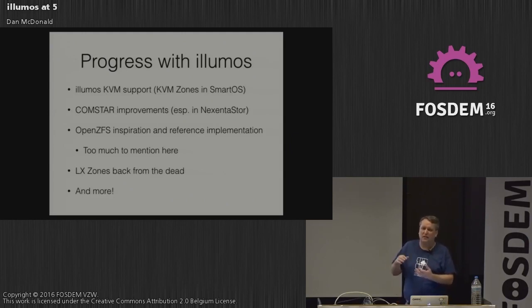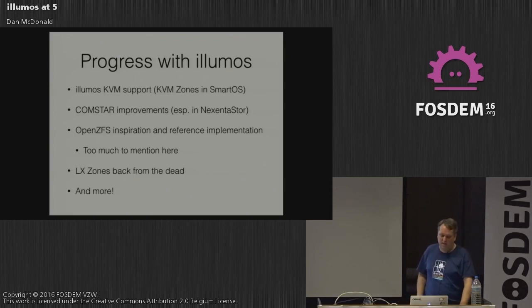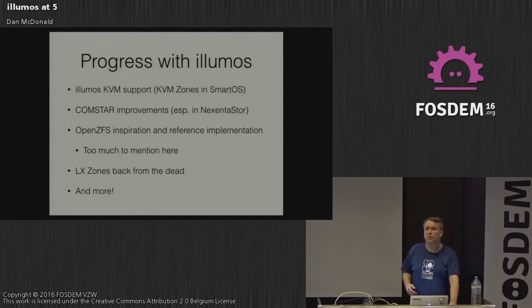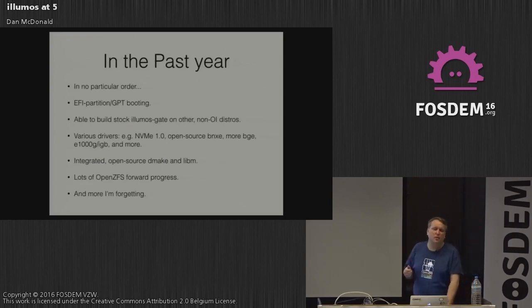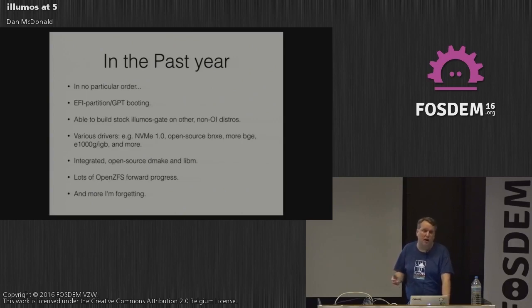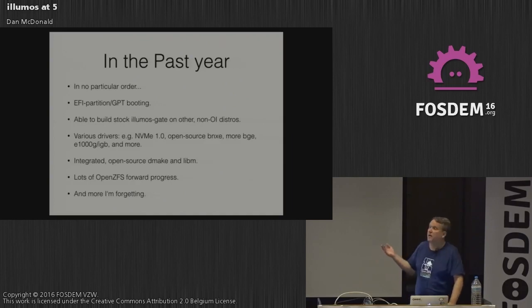LX zones started in OpenSolaris — the ability for a zone to emulate Linux enough in its library layer to let Linux apps run. It fell by the wayside, but Joyent brought it back from the dead. In the past year, we've put in EFI partition and GPT booting to keep up with modern hard drives. We were able to build Illumos gate — for a long time you could only build it on OpenIndiana — and now OmniOS and other distros can use those changes to build Illumos gate on whatever distro you're running, which is good when upstreaming software.